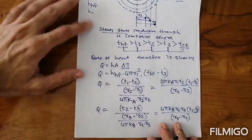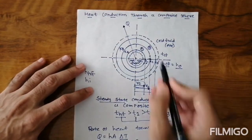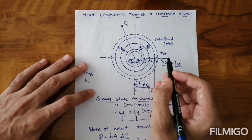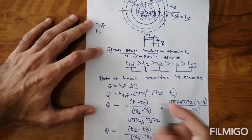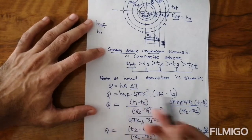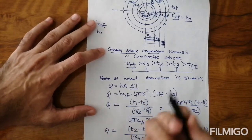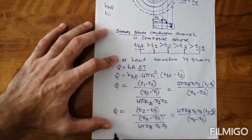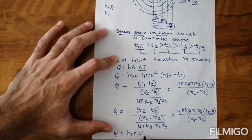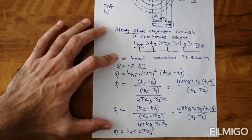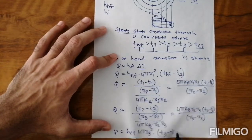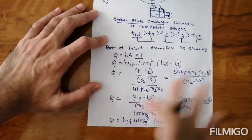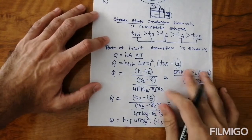For the last step, heat transfer from T3 to TCF — solid to fluid — convection is present. Using Newton's law of cooling: Q = HCF × 4πR3² × (T3 − TCF).